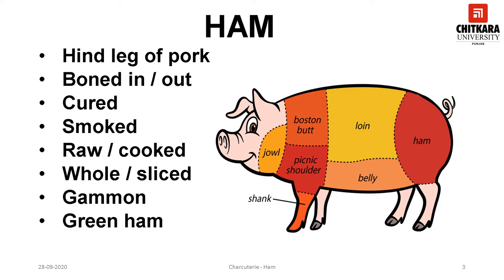The ham may be sold whole or sliced, cooked or raw, dried, and sometimes smoked. A good ham should be plumped with an ample amount of fat under the rind. Pork shoulder is cured in the same way, but it is not entitled to be called ham. The flavor is not as good, but it can be used in cooked ham dishes.